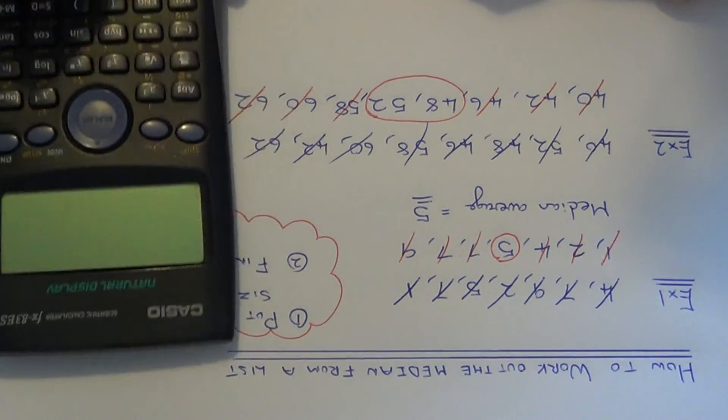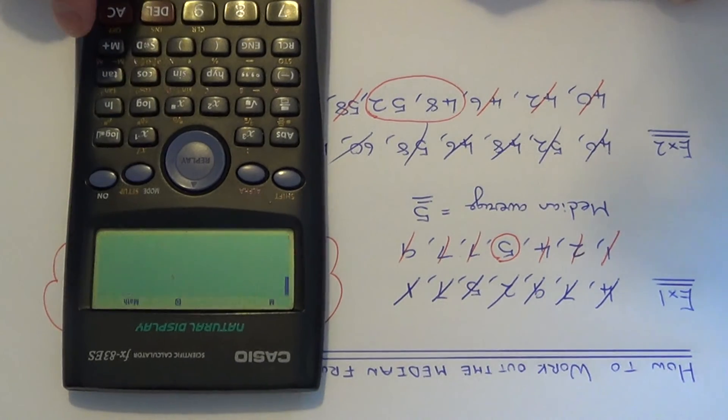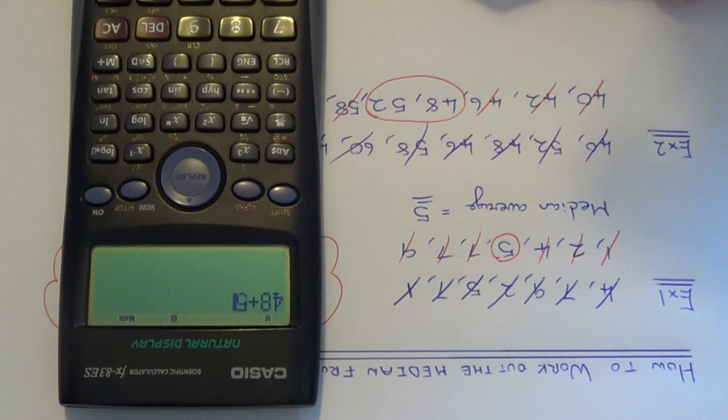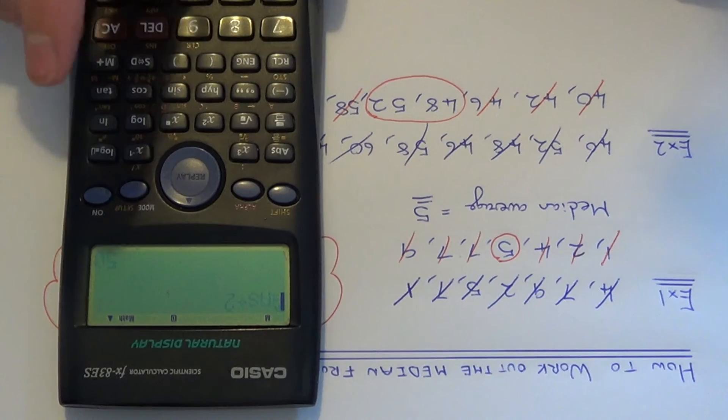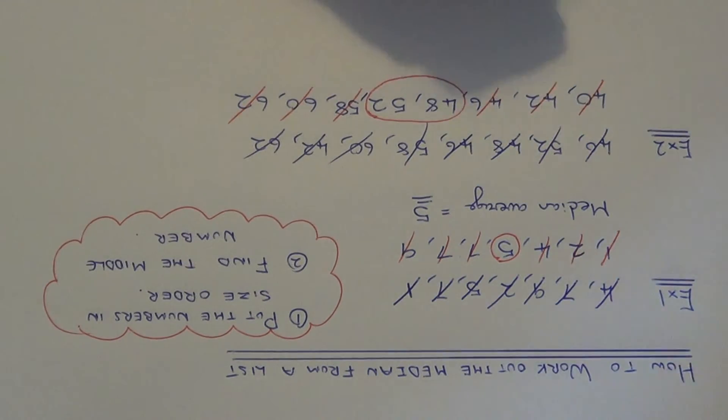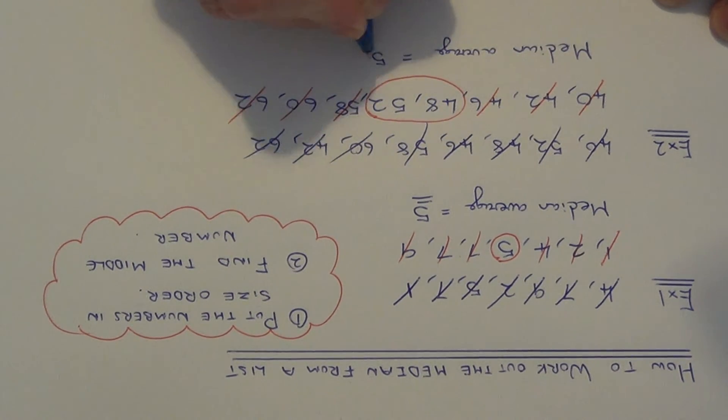If you're finding it difficult to find the middle of those two numbers, you can always add the two numbers up on your calculator and then divide that number by two. And that will give you the middle of those numbers. So our median average this time is equal to 50.